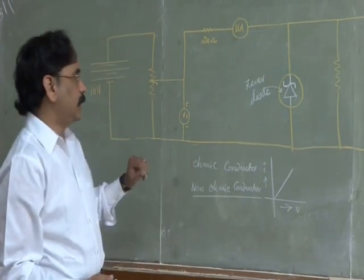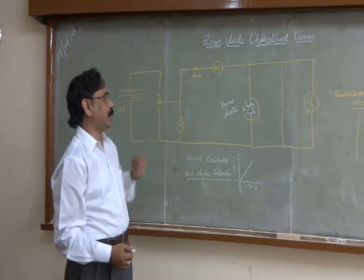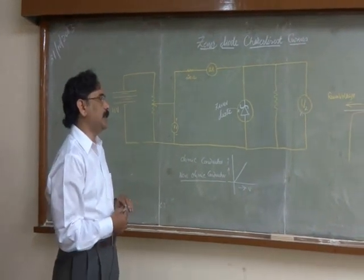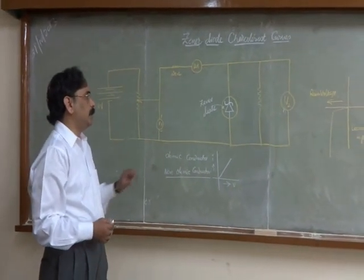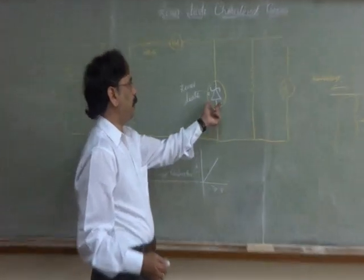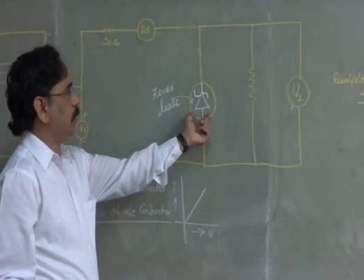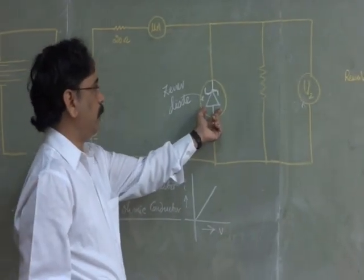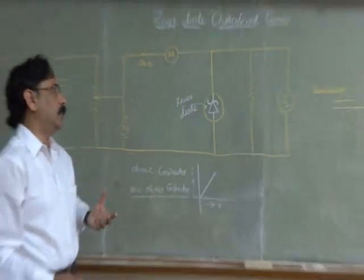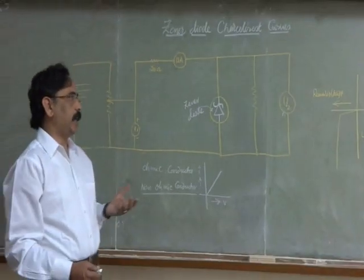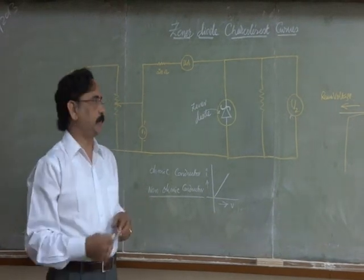In this session, we are going to talk about the characteristic curves of the Zener diode. This is the symbol of the Zener diode. It is a special kind of diode which is operated always in reverse bias.